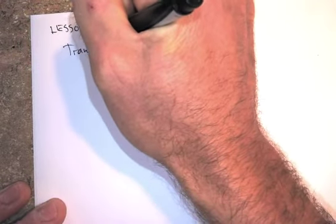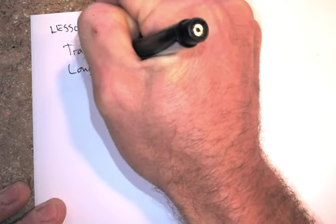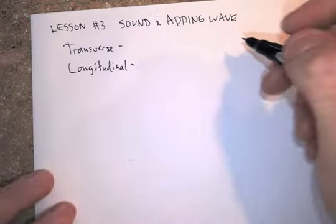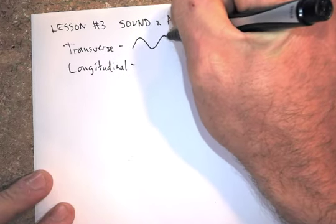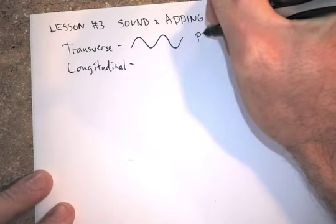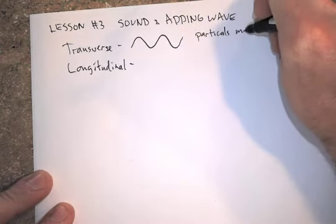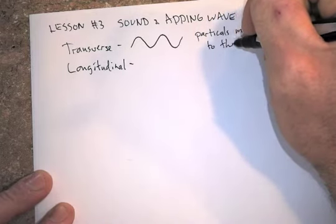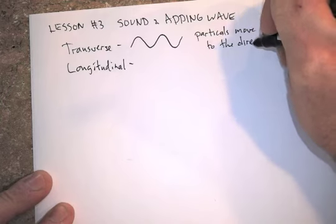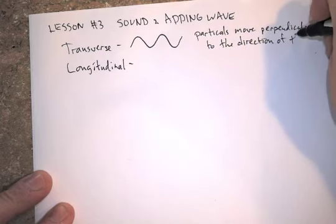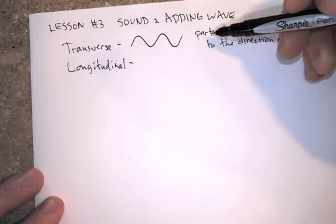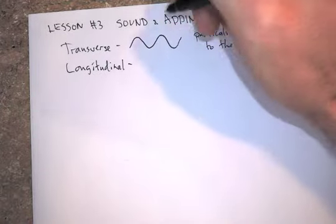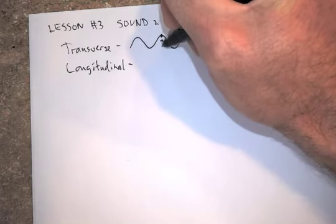We need to know transverse and longitudinal. Transverse waves are basically up and down waves, which is mostly what you think of when you think of a wave. The particles move perpendicular to the direction of the wave. So the particles are moving up and down — you can imagine in the water, the water is just moving up and down. The wave travels sideways, but the particles are moving up and down.